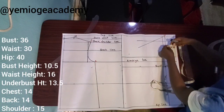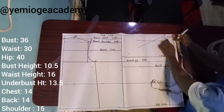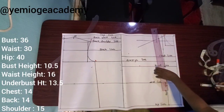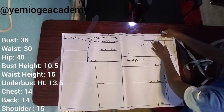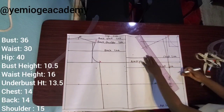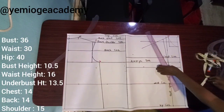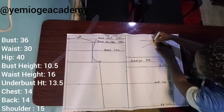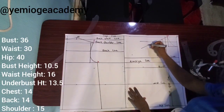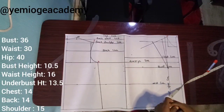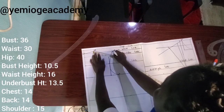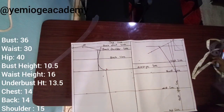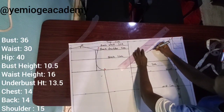Now I want to get my shoulder point, but first let me start drafting my shoulder dart. I measure an inch from the bust span line on the shoulder line and connect it to my bust point — that's my first dart line. Then I measure 3 inches from that line and connect it again to my bust point — that's the second dart line. Please ensure that the two lines have the same measurement. Adjust the second line to meet the measurement of the first. You must measure equally.